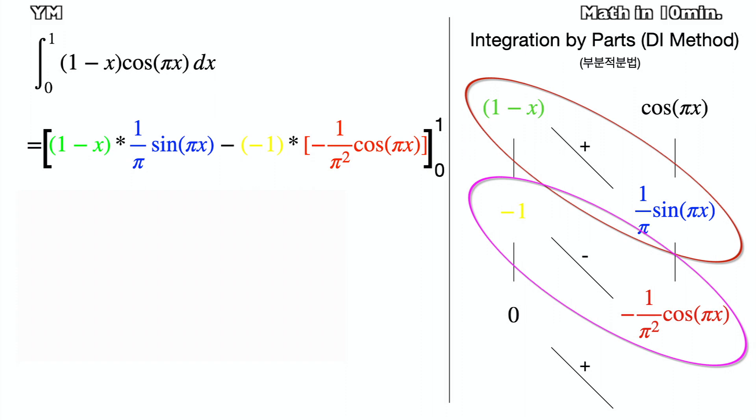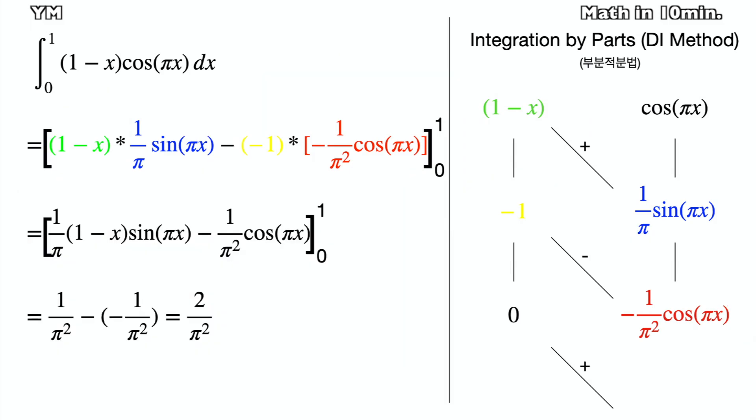And then multiply like the groups on the right side. Then apply onto the equation like the slide. As a result, I get 2 over pi squared.